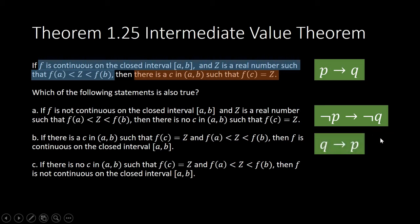The statement in letter b is what you call the converse: q implies p. If there is a c, then f is continuous on the closed interval.